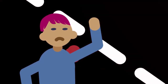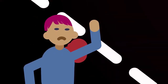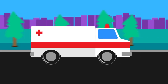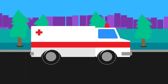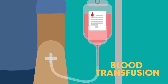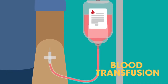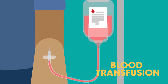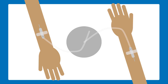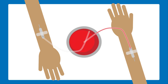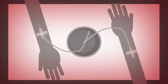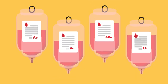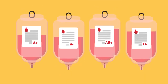Imagine you've been involved in an accident. You're bleeding and rushed to hospital. Thankfully, you're given a blood transfusion to replace your lost blood. But you can't just have blood from any old donor. In fact, when doctors first attempted blood transfusions in the 17th century, they were unsuccessful and patients died. How do medical teams now know what blood to give to which patient?